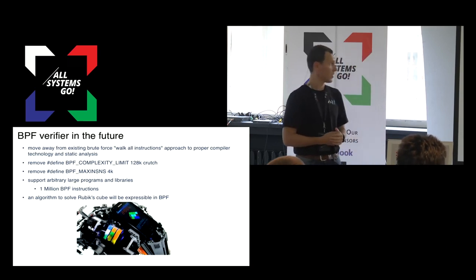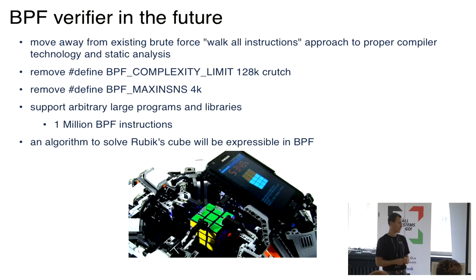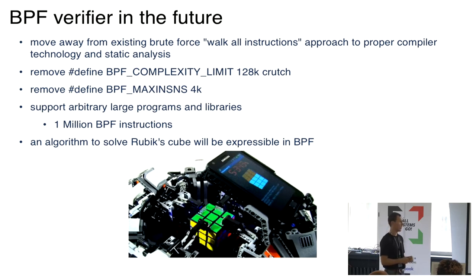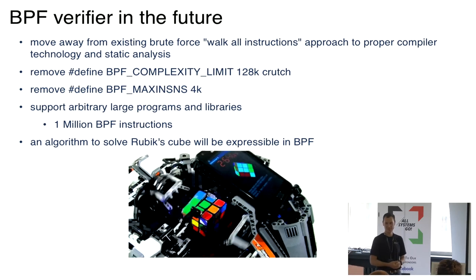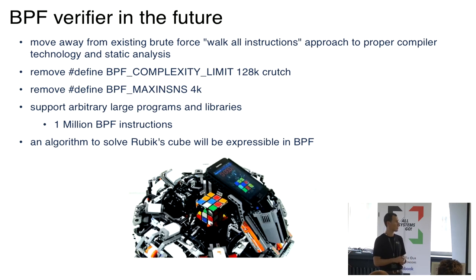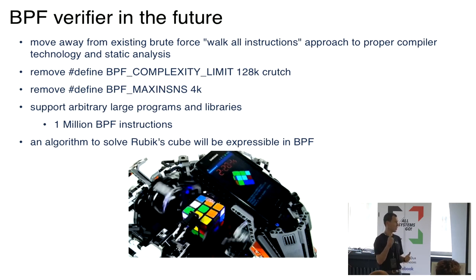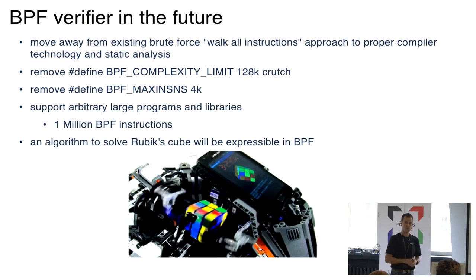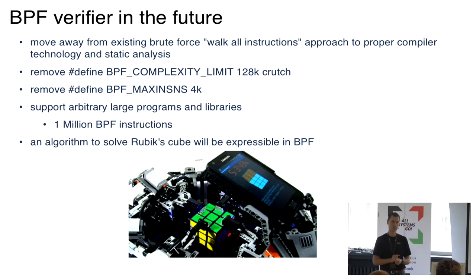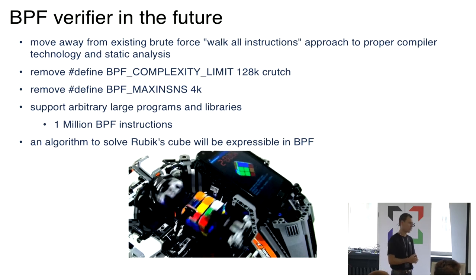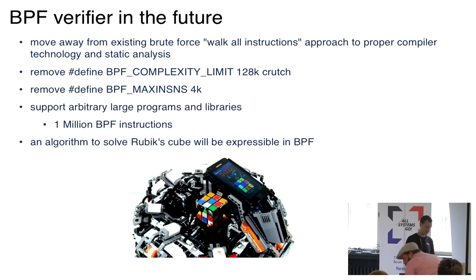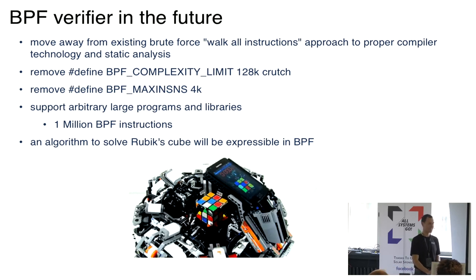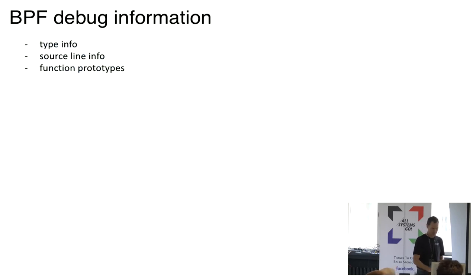There is still so much going on — indirect calls, tail calls, and a short list of features that different companies and people are working on. Today we have the crutch of allowing only 4,000 instructions in one program and 128-instruction complexity limit. We couldn't do anything better at the time — 4K was the limit for classic BPF and 128 was just increased five times. Now we're getting bold: the next target is to get to one million instructions. Programs will no longer be small loop-free programs, but something big enough that a real Rubik's Cube algorithm would be expressible.